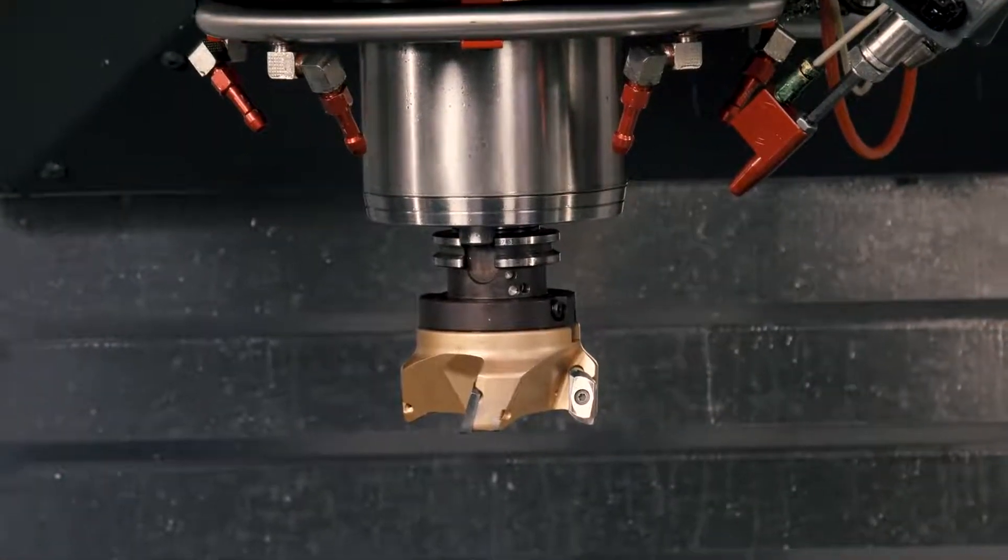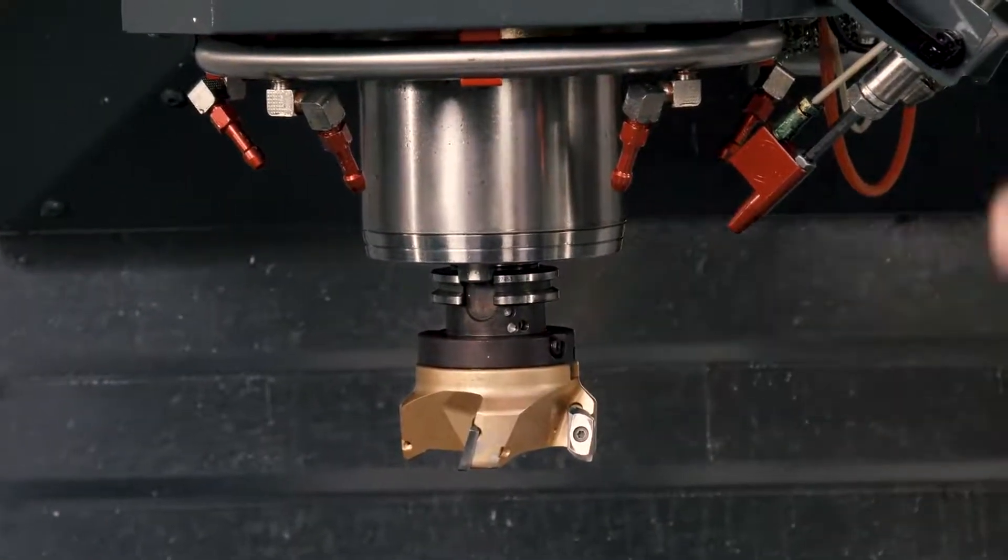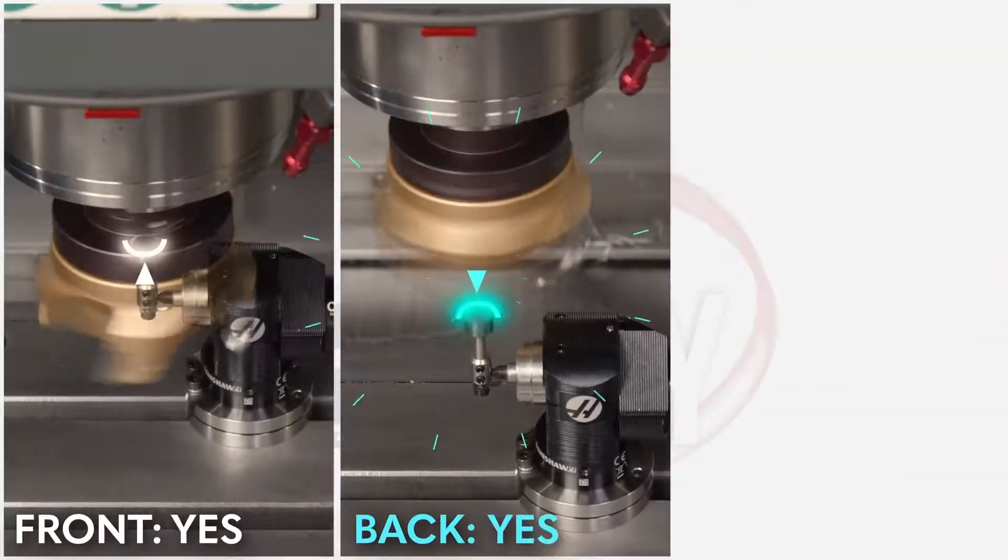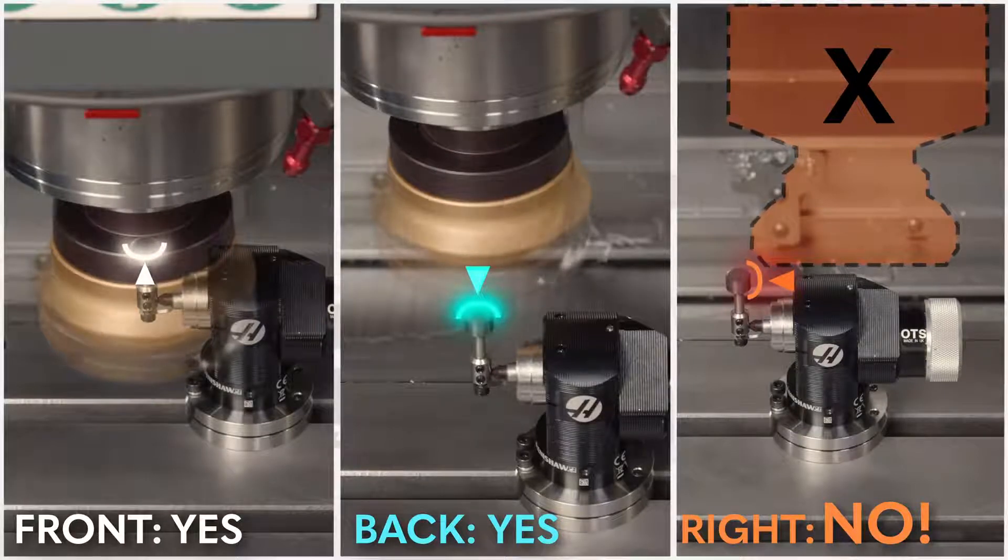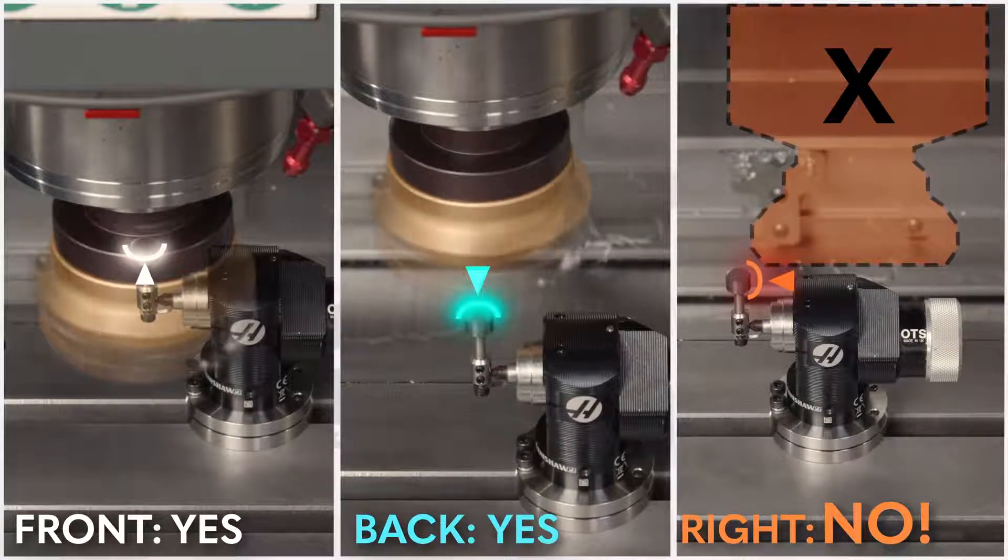Right now I've got a four inch diameter shoulder mill in the spindle, 100 millimeter diameter. And if I wanted to probe this tool for both length and diameter, it would come down and it would probe from the front and then the back. But what it's not gonna do is probe from the right side. It never probes the tool from the right side if we've calibrated the probe properly.